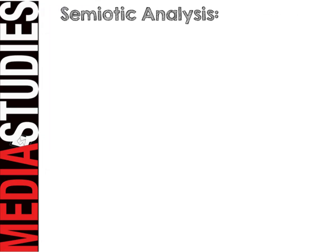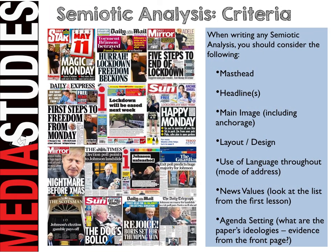So, we have our semiotic analysis completed through looking at those elements. For your own criteria when writing any semiotic analysis, you should consider the following: the masthead; the headlines; the main image including anchorage; the layout and design of the paper; the use of language throughout — not just the headlines but the main articles as well; the values of the newspaper in terms of why those stories were selected; and then the agenda setting — what are the newspaper's ideologies and what evidence can you find of those ideologies from the front page?